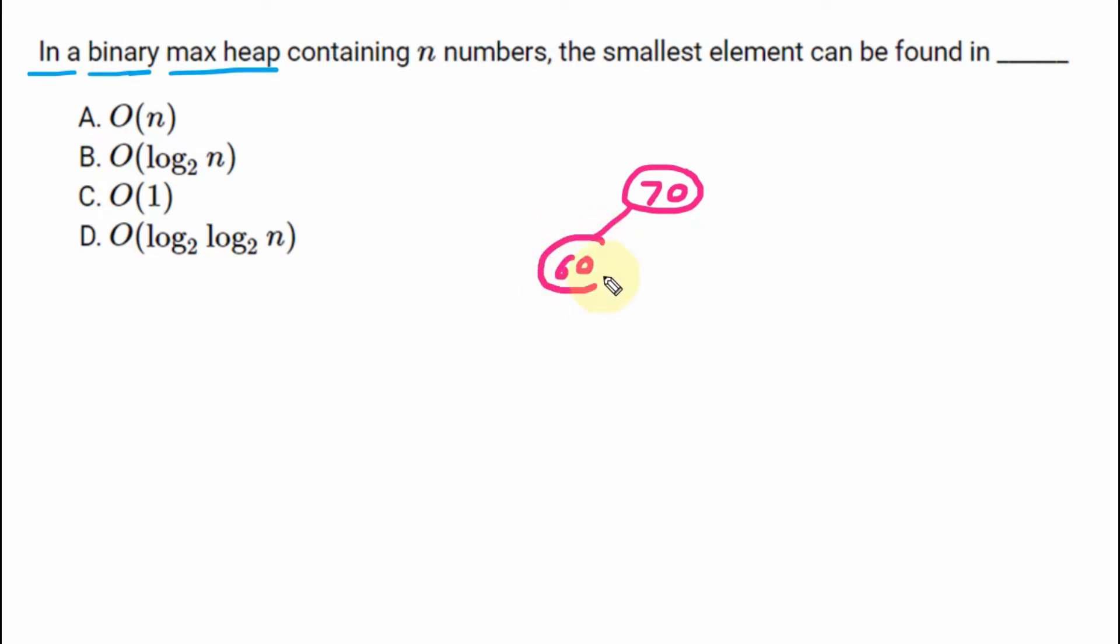So 60 is on the left hand side. Now is the turn for the right hand side. Next largest, let's suppose that we are having 50. So here 60 and 50 are the two more largest elements.